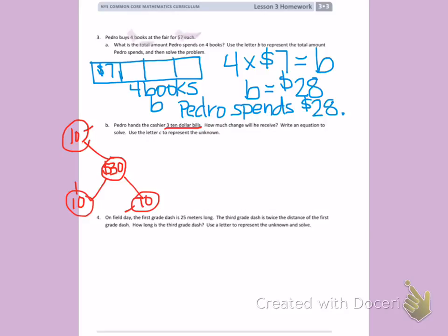He needs to spend $28, so I need to find out how much change he will receive. To do this, I will start with the $30 he hands the cashier and subtract the $28 he is spending to equal C.